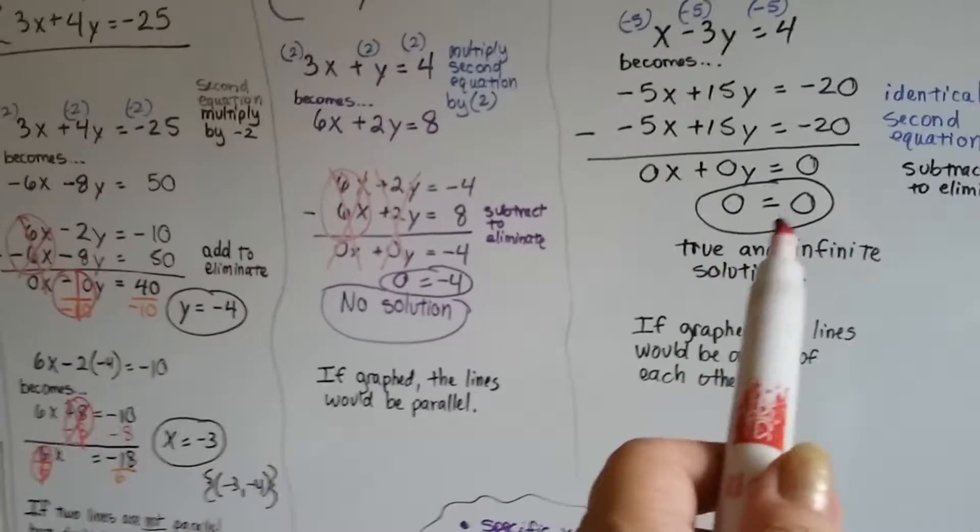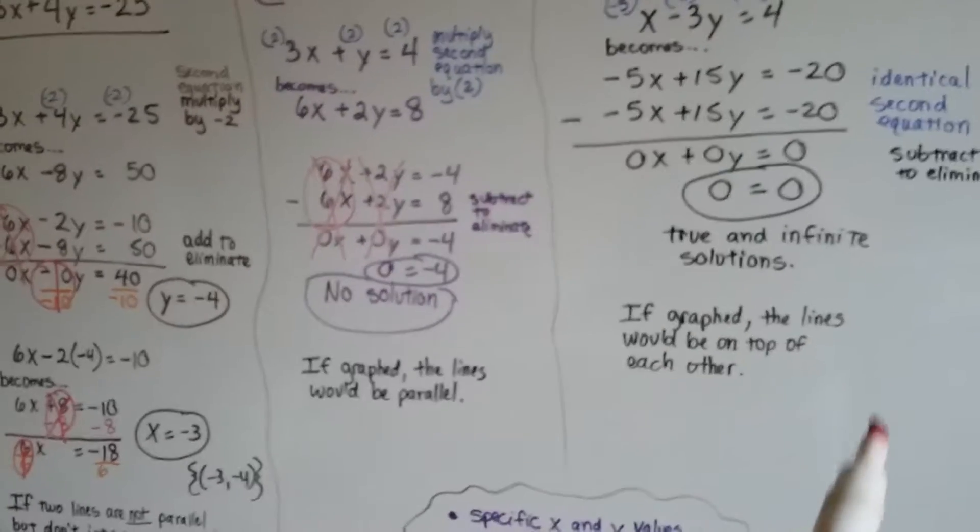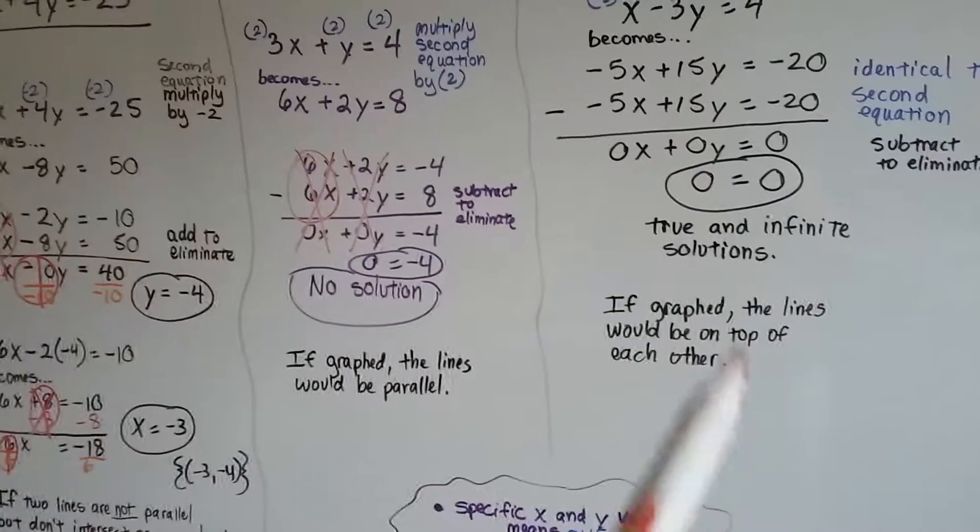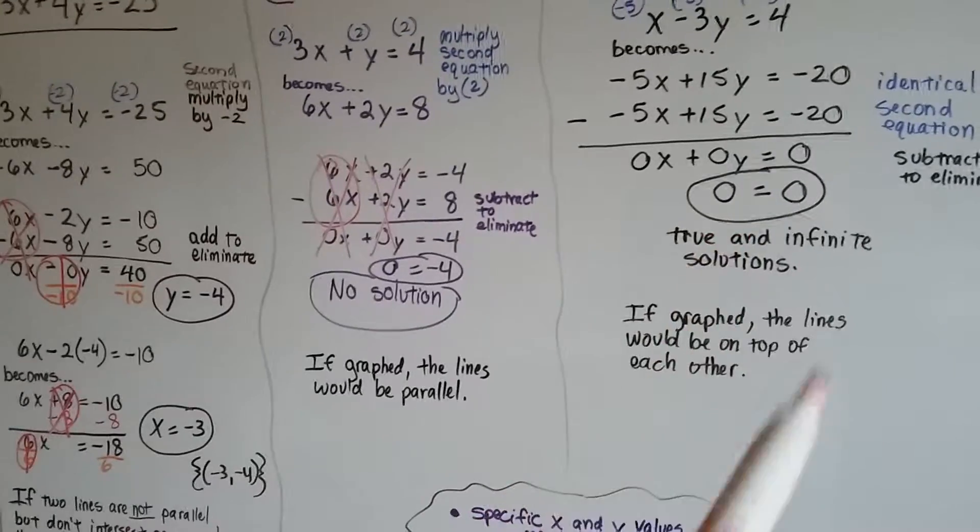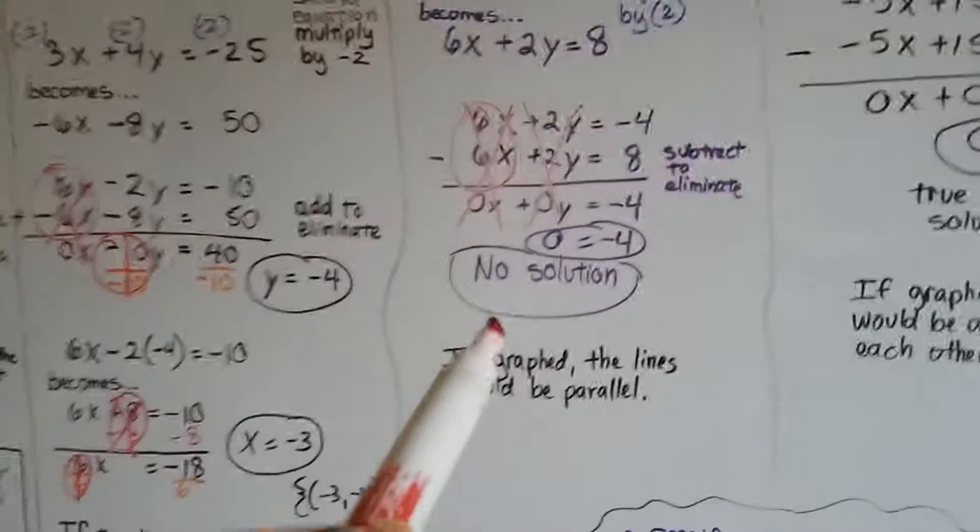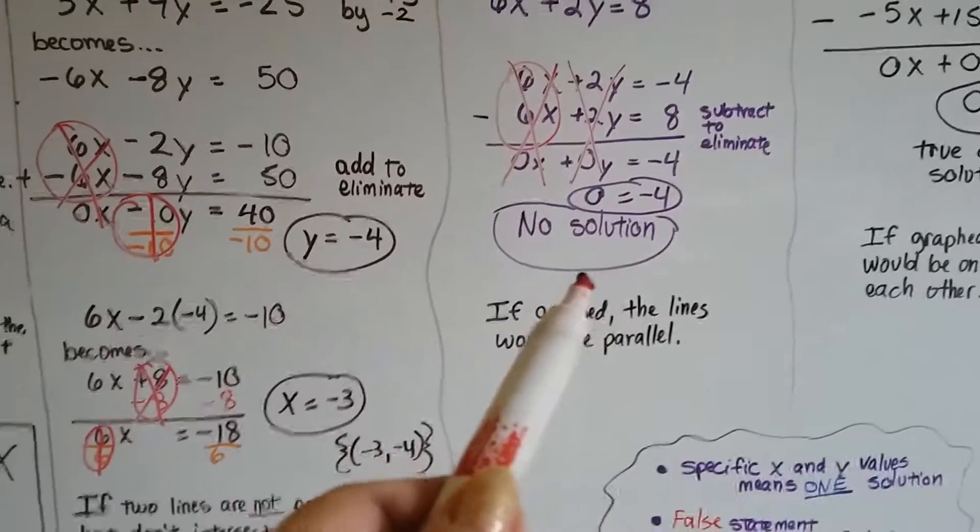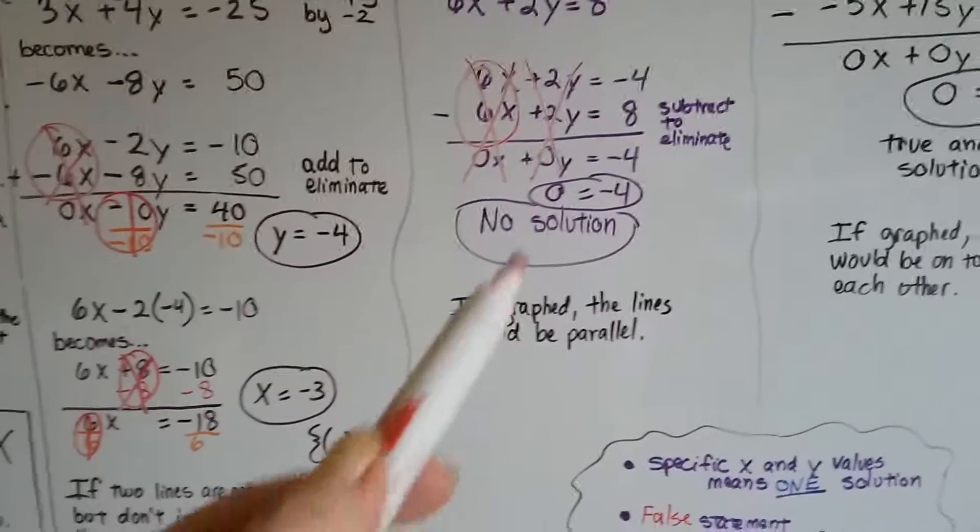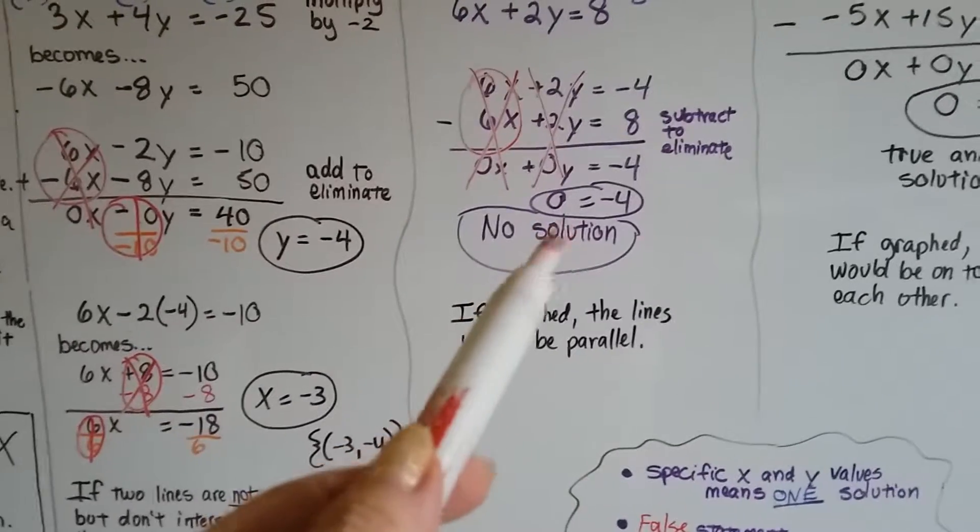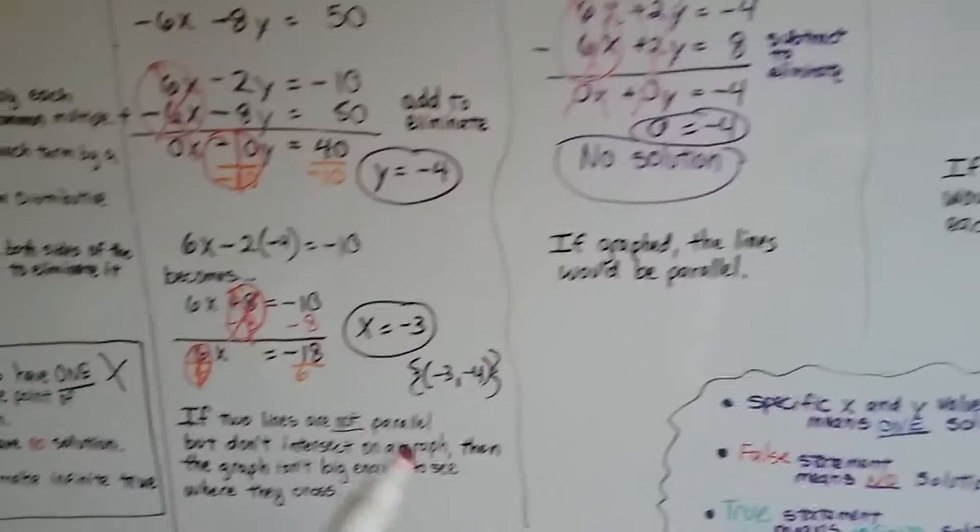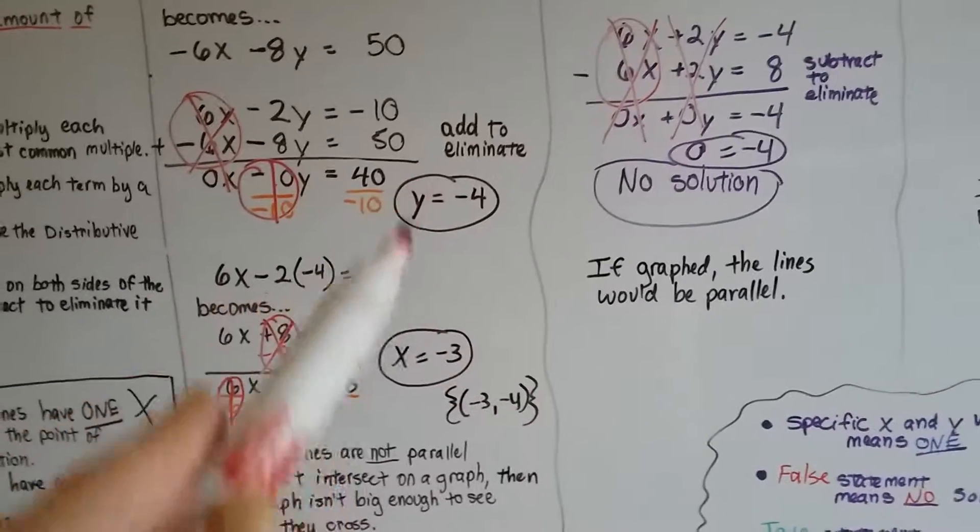When it's true and the lines are on top of each other, we've got 0 = 0 or -3 = -3. That means the lines are on top. When it's a false statement like 0 = -4 or 5 = 6, there's no solution and they're parallel.